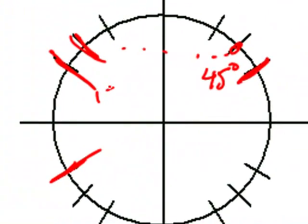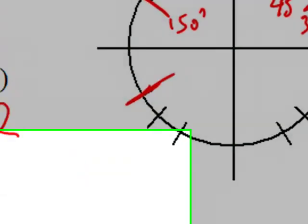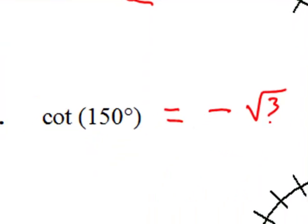And 150 degrees, again related to 30 degrees. And the cotangent at 30, we can look that up, is the square root of 3. So this value is negative square root of 3.